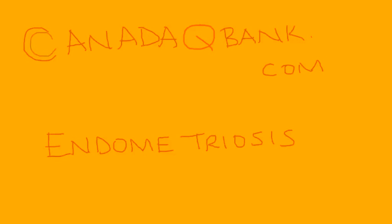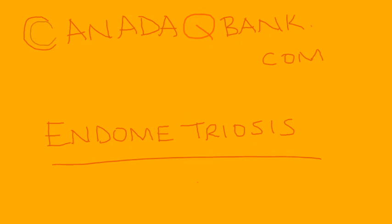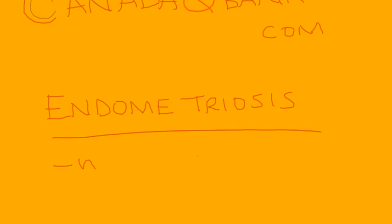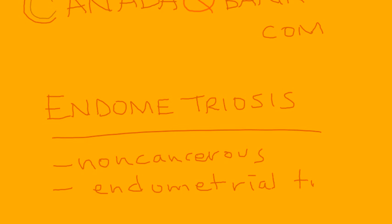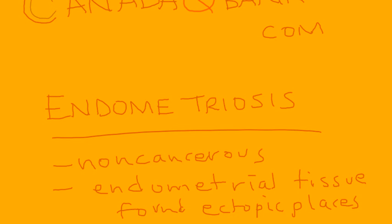In this video we're going to talk about endometriosis, a very common OBGYN condition. By definition, it's a non-cancerous disorder in which the tissue that normally exists in the endometrium — the lining of the uterus — is found in ectopic places. We're going to talk mostly about the structure limited to the area of the pelvic region.